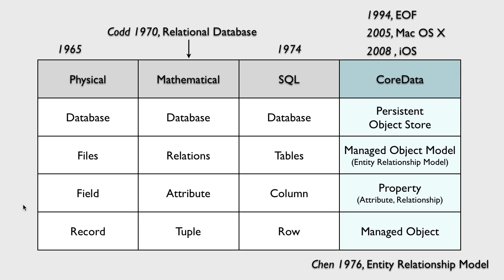Databases go way back in history. The term database was introduced in the mid-1960s when hard disks were invented. Before the arrival of hard disks, tape-based systems were used, which meant daily batch processing of the data. But hard disks allowed for interactive access to the data, and that was a revolution. The overall concern was efficiency, so programmers described database concepts in physical terms — they used terms like files, fields, and records.